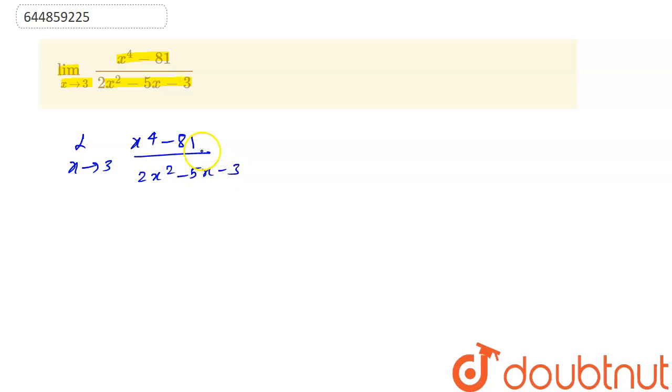If we put x equal to 3 into the given function, it will become (3^4 = 81 - 81)/(2·3^2 = 9 - 5·3 = 15 - 3), which if we sum this will be 0/0 form.